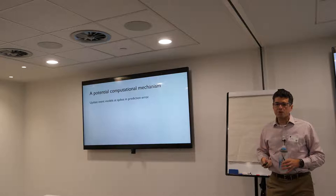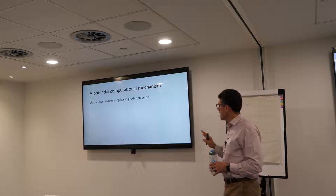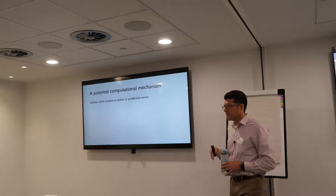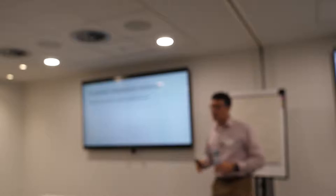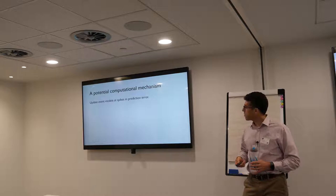Perhaps most interesting to me: if you update in the wrong places, what kind of event models do you wind up with? You wind up with representations that don't carve the world at its joints. So we've been interested in what's the control architecture for updating your current working model of the world. The basic computational hypothesis we've been exploring is that a good unsupervised signal for event model updating is prediction error: if you use your current working model to drive predictions about what's going to happen in the near future, and update when prediction error spikes, that's a good way of keeping appropriate event model representations.